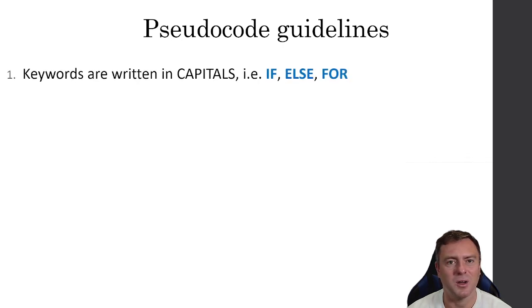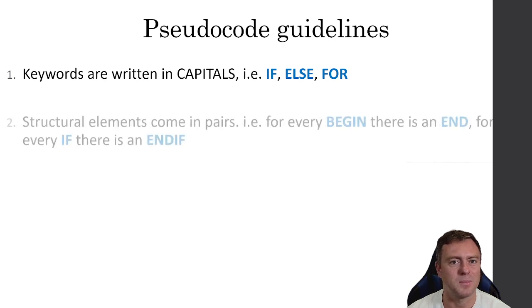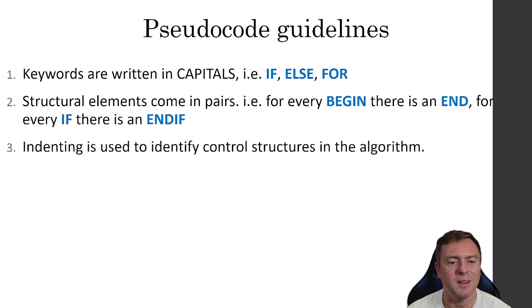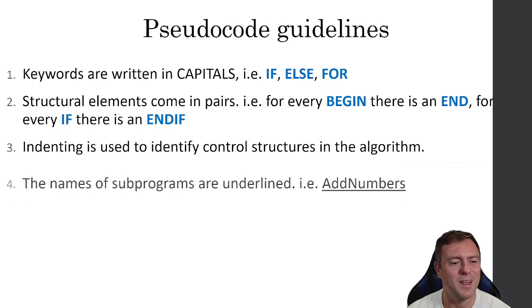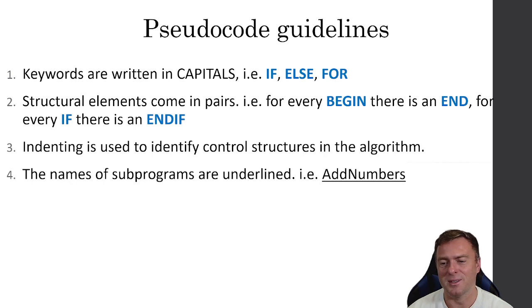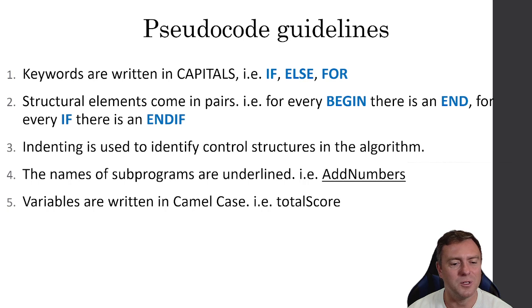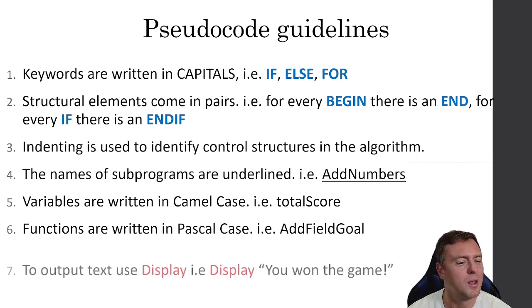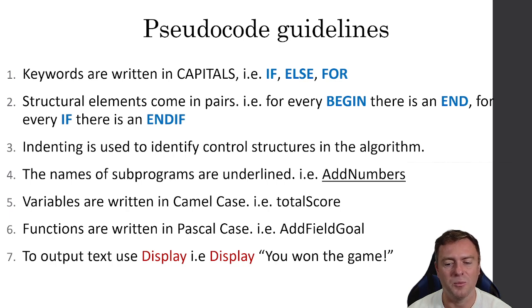So I found this, which was pretty cool. So this is the pseudocode guidelines. And you need to know this off by heart if you're in the New South Wales system. So keywords are always written in capital letters. So these are your reserve words. So if, else, for will always be in capital letters. Any structural element always comes in pairs. So for every beginning, there is an end. So for every if statement, there's an end if. For for loops, there's the next statement. But while loops, there's an end while, there's this pairing between the two. Indent ending, indenting is used to identify control structures in the algorithm, and the name of the sub programs that you use. So if you're going to reference another program elsewhere, need to have an underline underneath it. Variables are always written in camel case. So for example, total score, and functions are always written in Pascal case. So add field gold. To output text, we use display. So for example, display, you won the game, which is very similar to print. But for NESA, we will have to follow these guidelines.